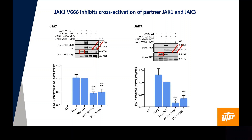These experiments also demonstrate that wild type JAK1 and JAK3 expressed without a partner JAK1 MIG constructs were capable of auto-activation, which you can see in the red rectangles. Very interestingly, our mutation B666 inhibits cross-activation of partner JAK1 and JAK3, which you can see in the red arrows compared with the results on the left.